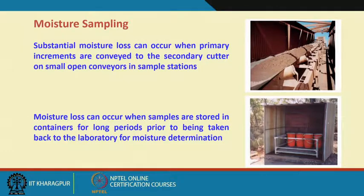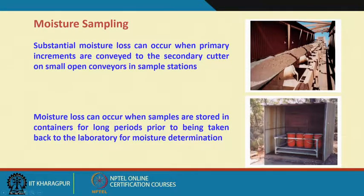Moisture sampling — suppose moisture is a very critical parameter for your client. If you have taken a representative sample but are sending it to the lab through an open conveyor belt, it is open to the atmosphere and will definitely pick up some moisture. So your moisture data may be erroneous. There will also be a considerable delay in many situations between collecting your samples and your analysis, so if the moisture sample is not preserved properly, that will also give erroneous results.